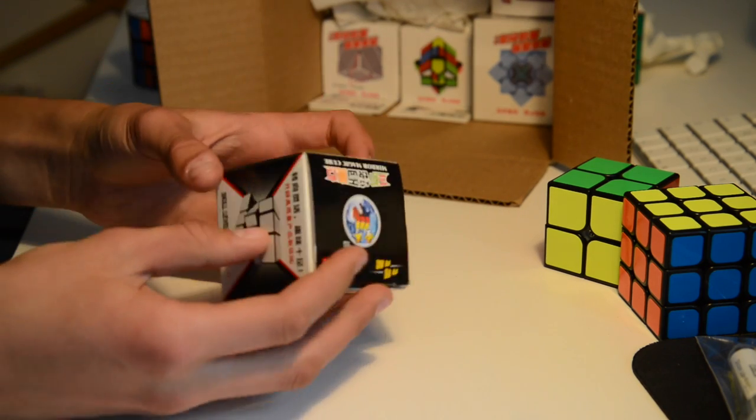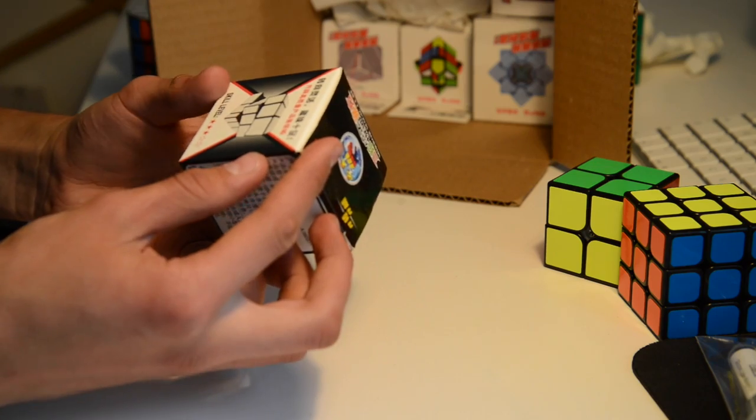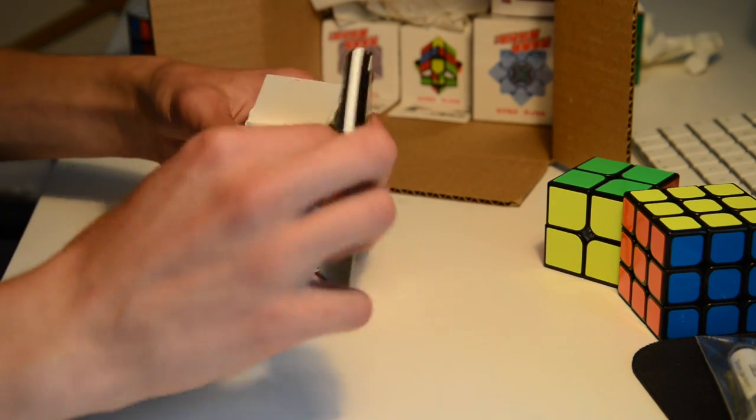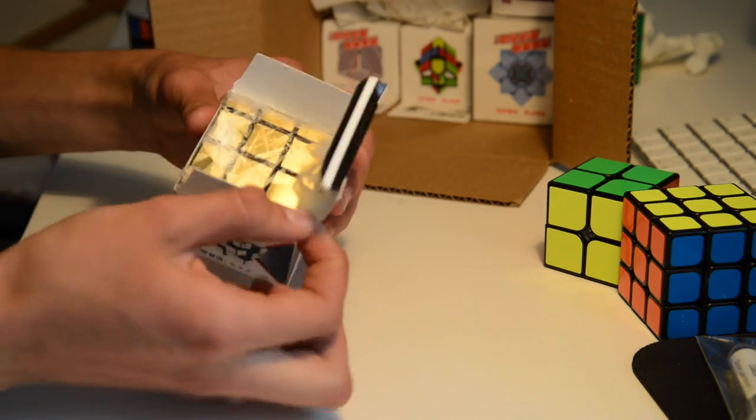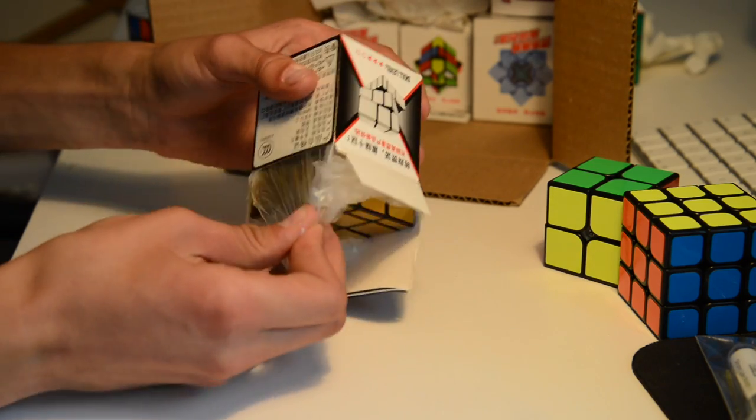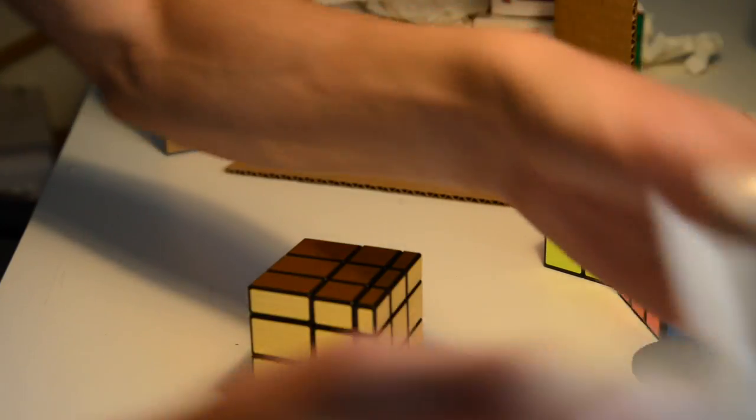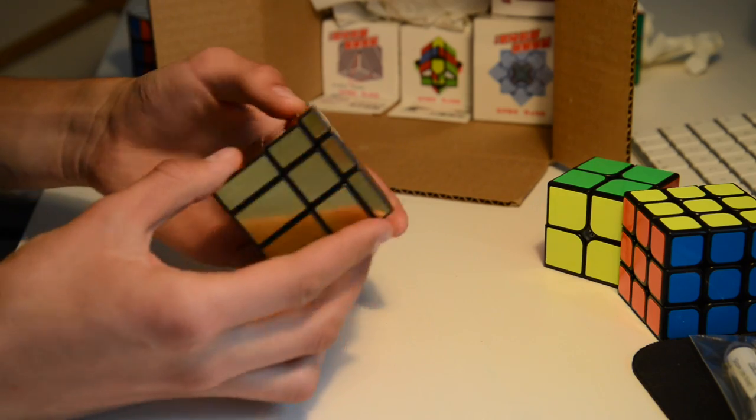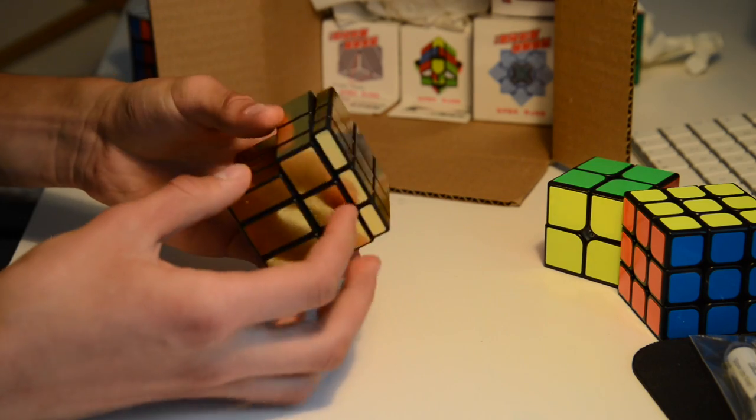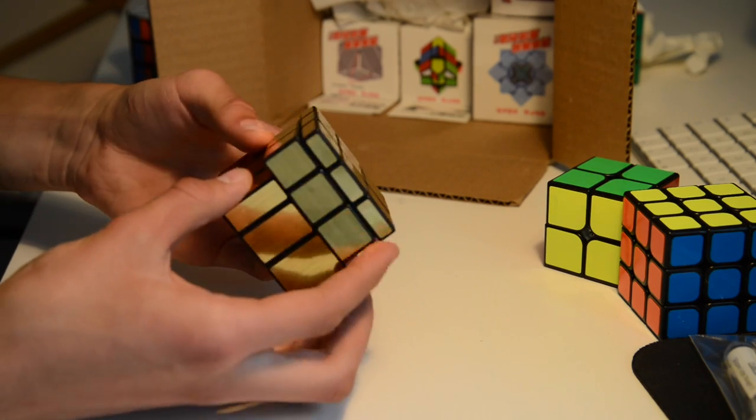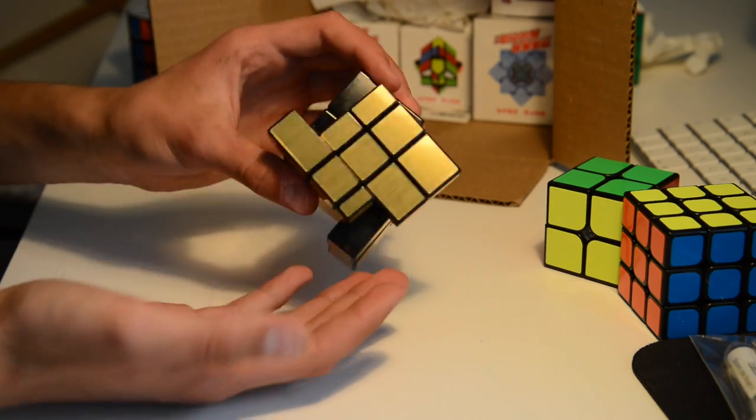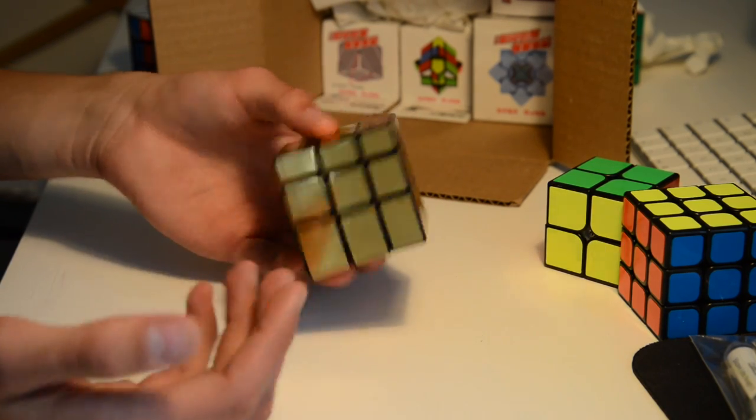Next up we have the mirror blocks, the mirror 3x3. It's a 3x3 and the sides are different by the sizes, not by the colors. It's really interesting. It's gold. Holy crap, that's so cool. Look at that. It is so trippy. You know what, it is too shiny.